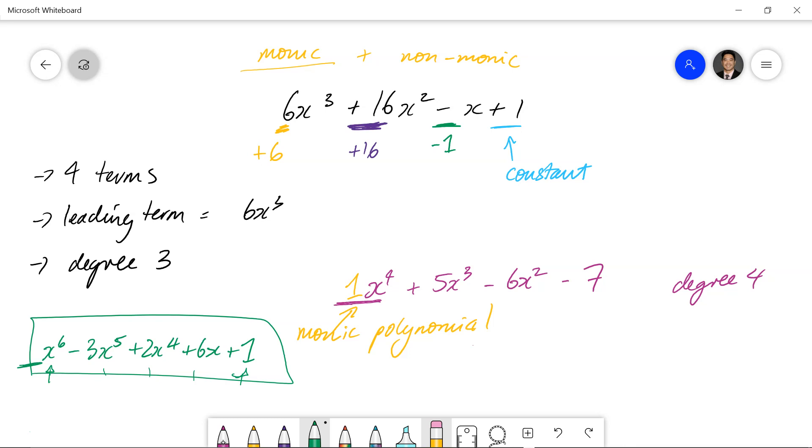And we should know that the coefficient of x to the power 5 is minus 3. Not just 3, it's a negative 3. Coefficient of x to the power 4 is positive 2, and the coefficient of x is positive 6.